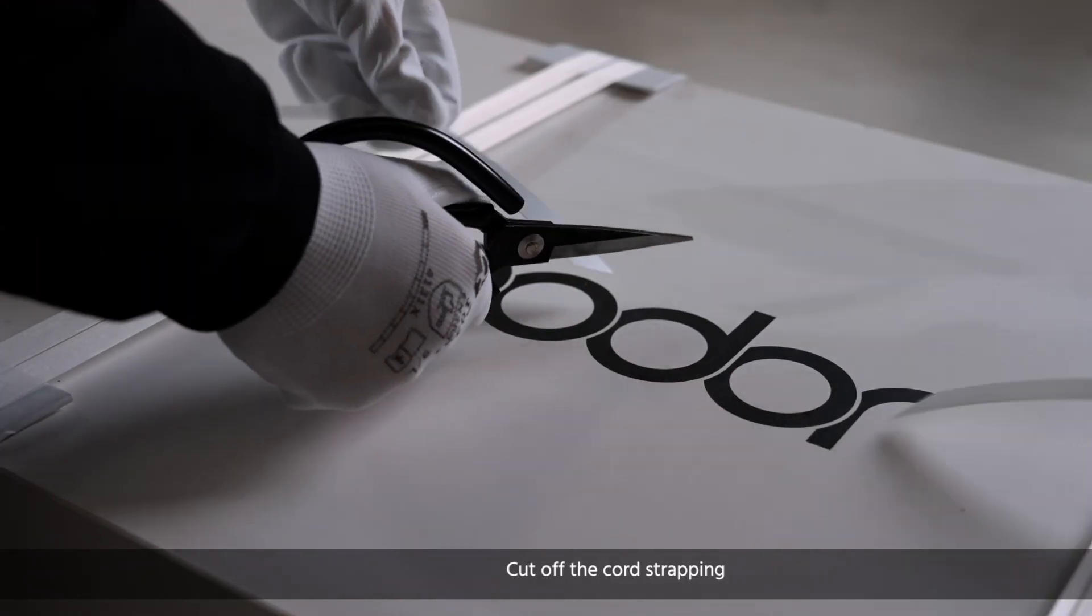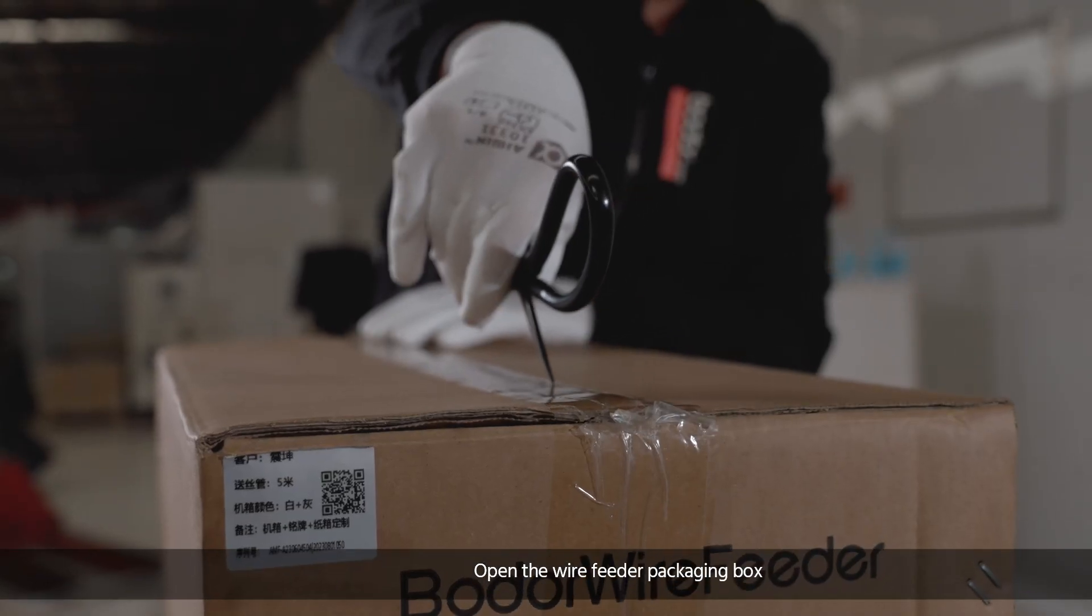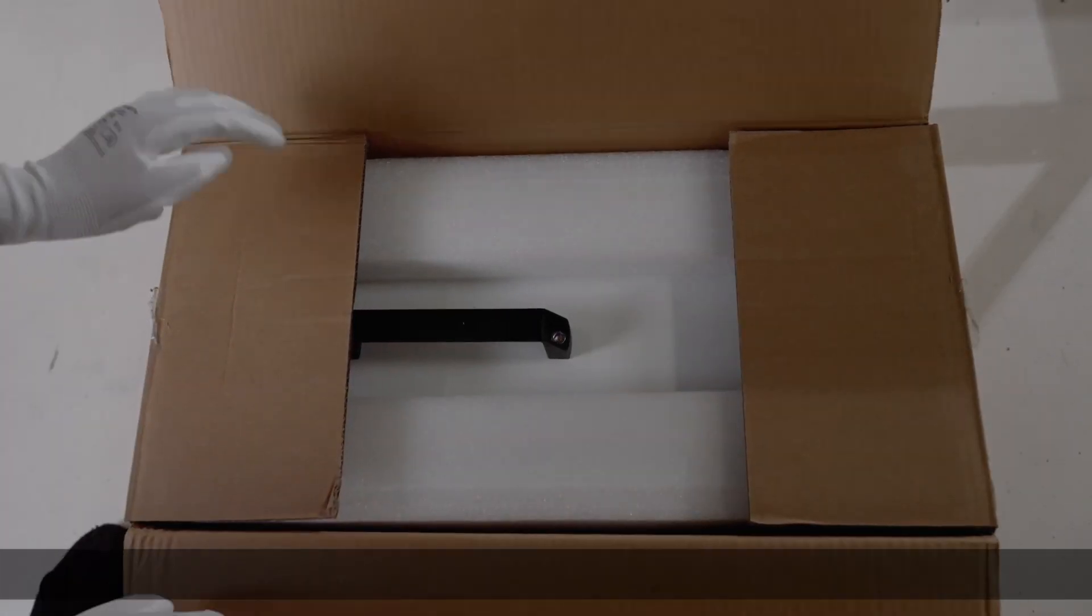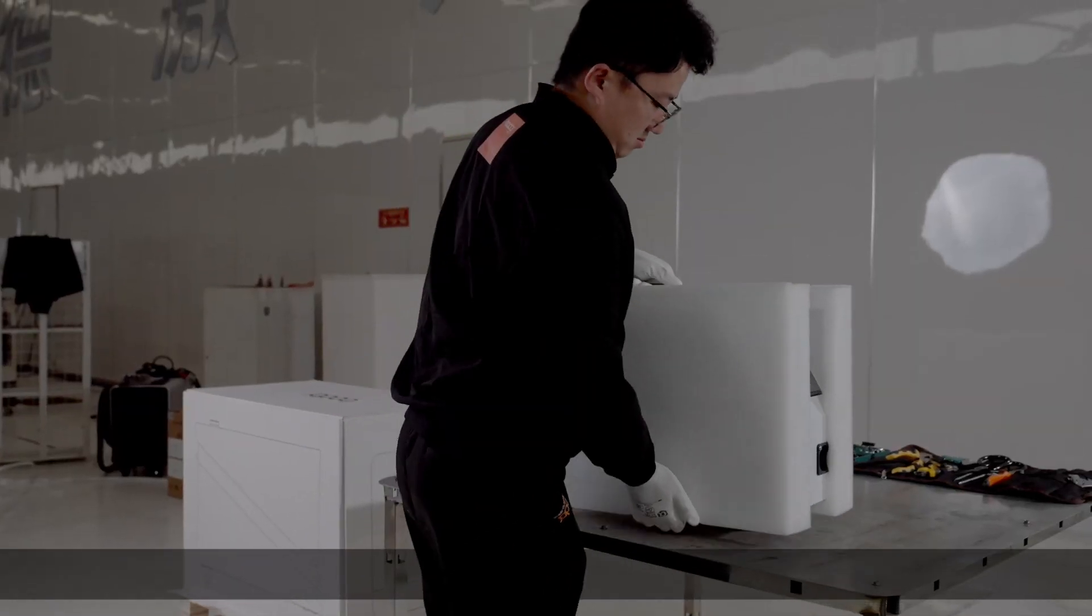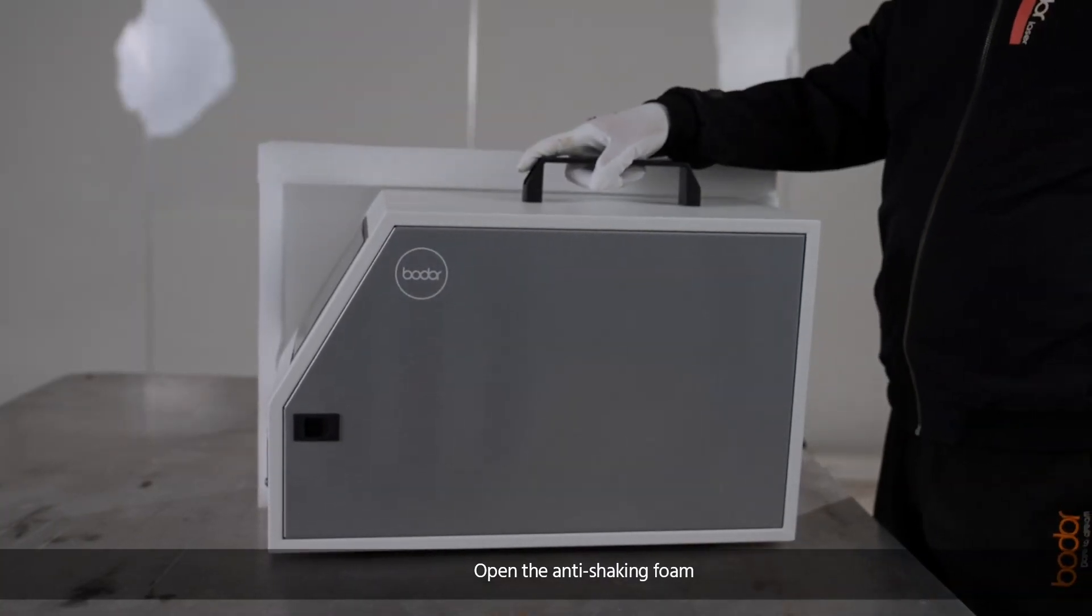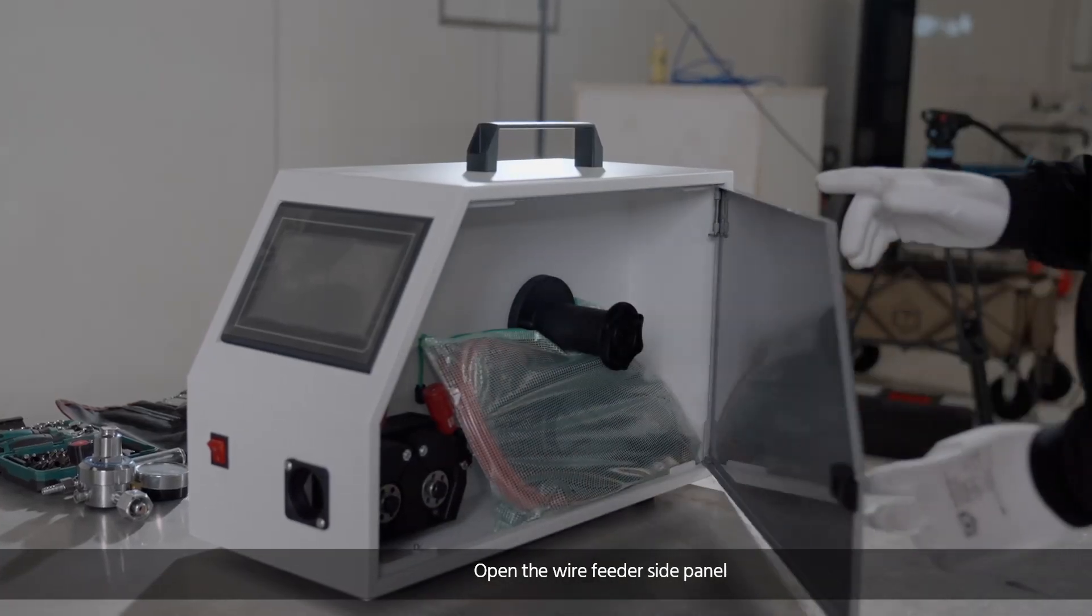Cut off the cord strapping and open the wire feeder packaging box. Take out the wire feeder, open the anti-shaking foam, and open the wire feeder side panel.